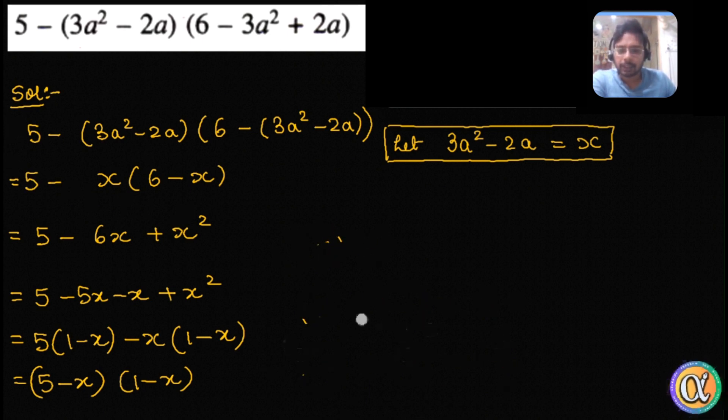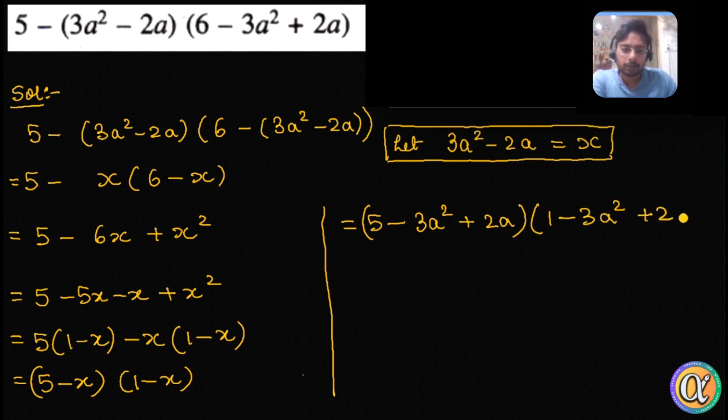Now we can substitute back the values of a. So my final answer would be 5 minus, so x is 3a square minus 2a. If you put a minus side outside, the signs would invert, so minus 3a square plus 2a. And in the second bracket, it's again 1 minus 3a square plus 2a.